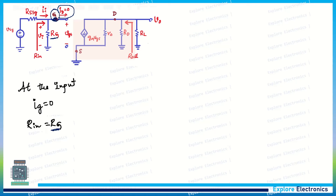The overall gain GV = (R_in / (R_in + R_signal)) × AV = −(RG / (RG + R_signal)) × gm × (R0 ∥ RD ∥ RL). This is the overall gain from the small signal input to the load. The output resistance Rout = R0 ∥ RD, combining the device's internal resistance R0 and the drain resistor RD.